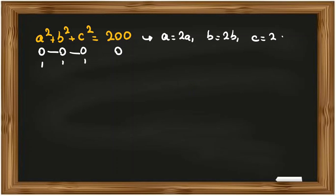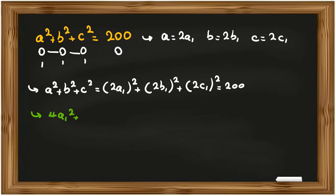Now, a squared plus b squared plus c squared equal to 2a1 squared plus 2b1 squared plus 2c1 squared equal to 200. And then, we can conclude that 4a1 squared plus 4b1 squared plus 4c1 squared equal to 200. Then we divide both sides by 4. It will be a1 squared plus b1 squared plus c1 squared equal to 50.